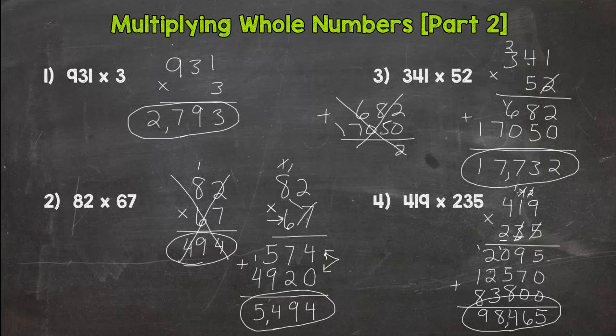Those are our four multiplying whole numbers problems for part 2. That gives us a total of 8 multiplication problems between part 1 and part 2. Hopefully you are ready to try some on your own. I will see you over at the mastery check. I drop the link below in the description and you can test yourself here to see if you have it down.